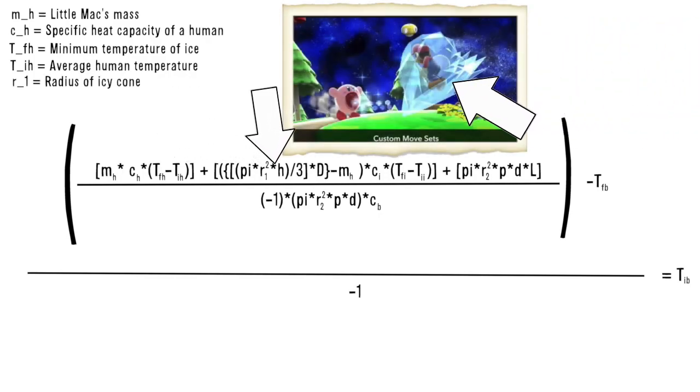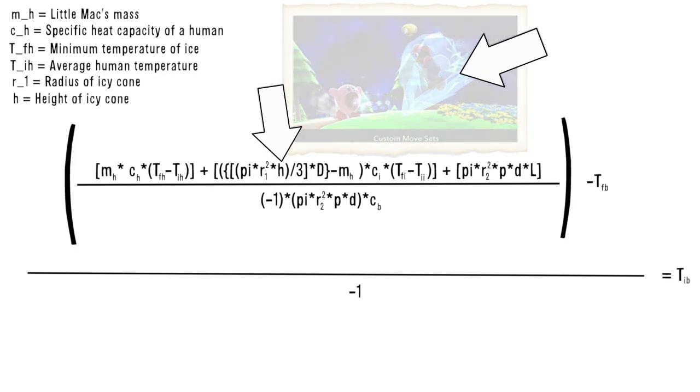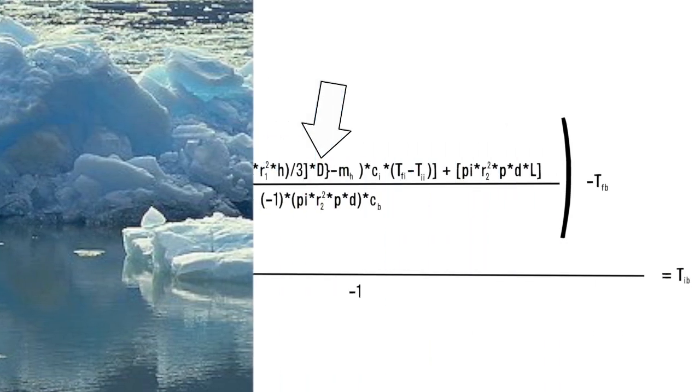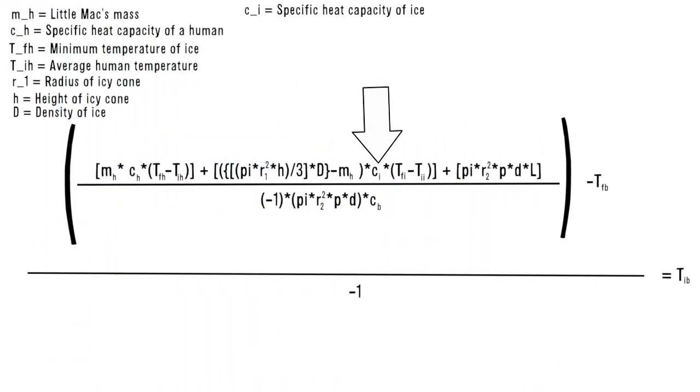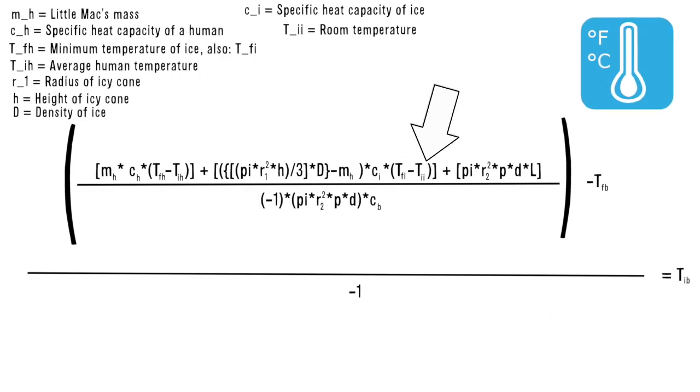R sub 1 is the radius of the bottom of the cone-shaped ice surrounding the frozen person. H is the height of that cone. Capital D is the density of ice. C sub IH is the specific heat capacity of ice. T sub FIH is the minimum temperature of ice. T sub IIH is room temperature.